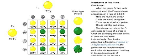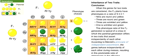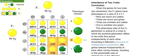When the genes for two traits are considered, the F2 plants have phenotypes in a ratio of 9 to 3 to 3 to 1. Nine are round and yellow, three are round and green, three are wrinkled and yellow, and one is wrinkled and green. This phenotype ratio of the F2 generation is typical of a cross in which the parental generation differs in two traits that assort independently of each other. According to Mendel's principle of independent assortment, the genes behave independently of each other during meiosis, resulting in this predictable ratio of phenotypes in the offspring.